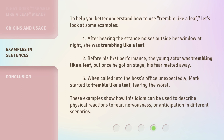To help you better understand how to use 'tremble like a leaf,' let's look at some examples. One: after hearing strange noises outside her window at night, she was trembling like a leaf. Two: before his first performance, the young actor was trembling like a leaf, but once he got on stage, his fear melted away. Three: when called into the boss's office unexpectedly, Mark started to tremble like a leaf, fearing the worst. These examples show how this idiom can be used to describe physical reactions to fear, nervousness, or anticipation in different scenarios.